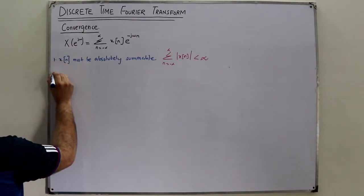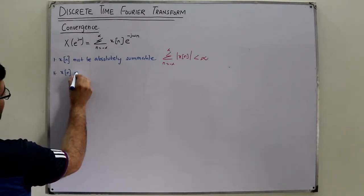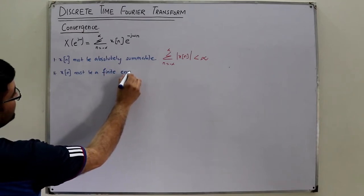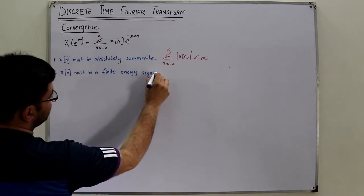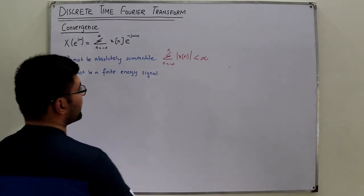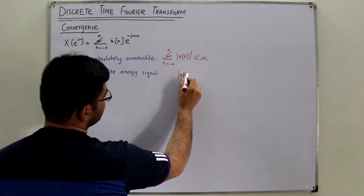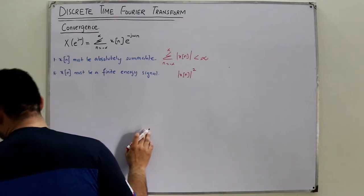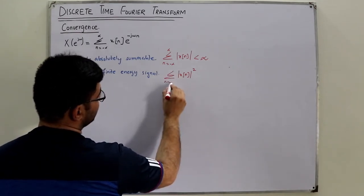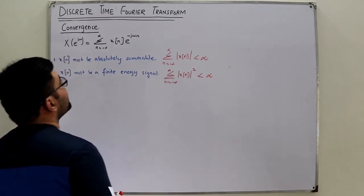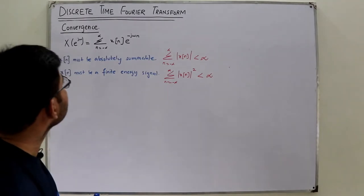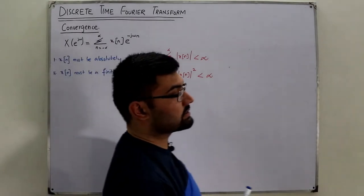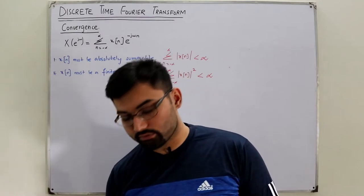The second condition is that x of n must be a finite energy signal. How do you calculate the energy? You take x of n, take its absolute value, square it, and then sum over the infinite interval. This should also be less than infinity. If these conditions are met, the Fourier transform will be converging — the summation will be finite. Those are the conditions for convergence of the discrete time Fourier transform.